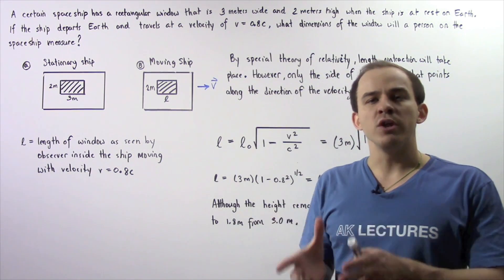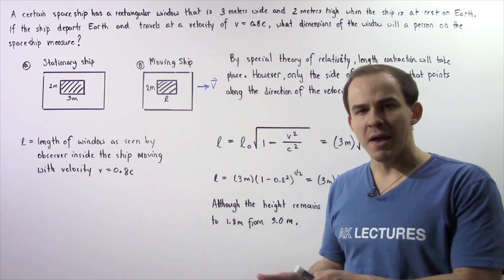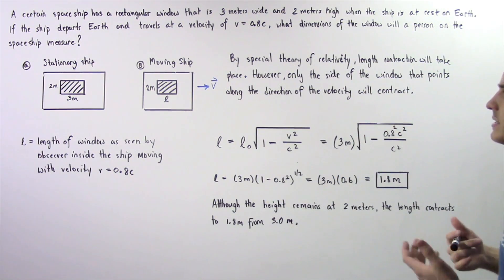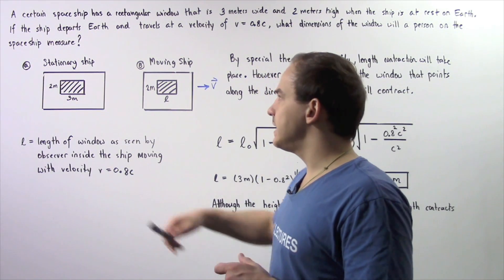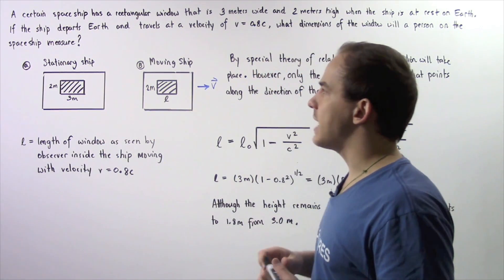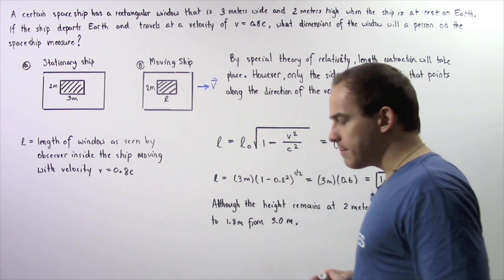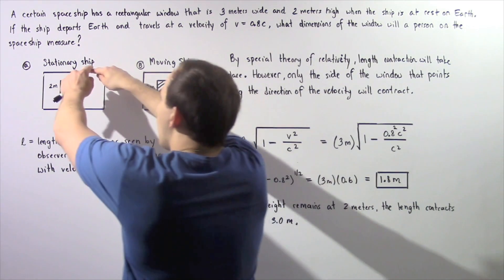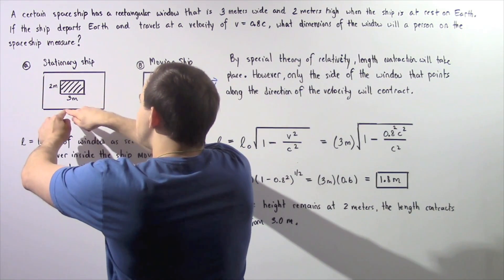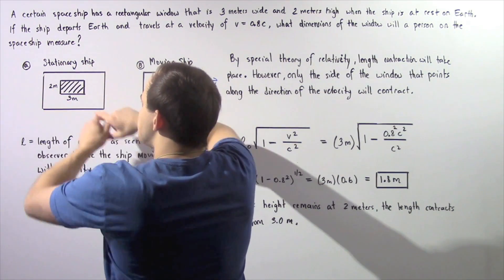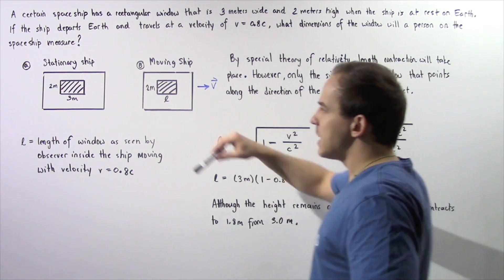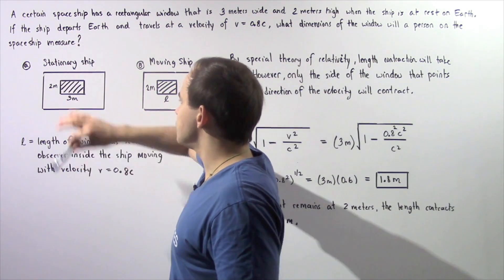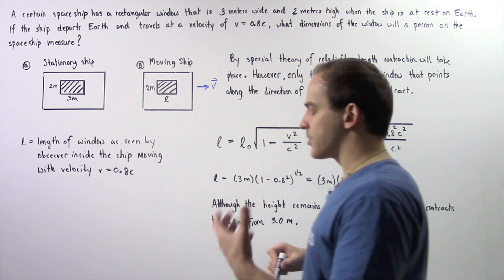What dimensions will the person on the spaceship measure when that spaceship is traveling with that velocity V? So let's begin by looking at diagrams A and B. In diagram A, we have one wall of our spaceship and the window as shown, and our spaceship is stationary on Earth. So the height is 2 meters and the length is 3 meters.